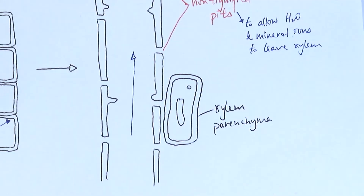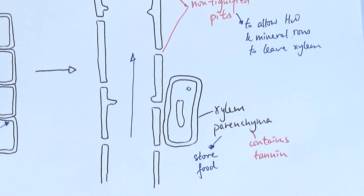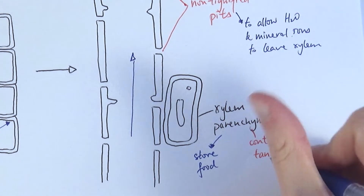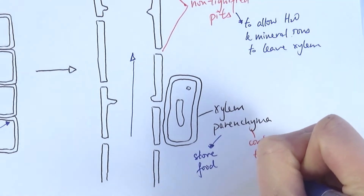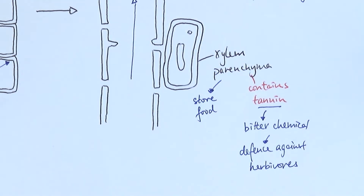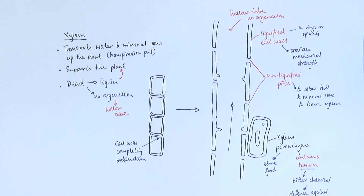Next to the xylem vessel, there will also sometimes be xylem parenchyma cells, and they serve two main functions. First, xylem parenchyma contains food stores, to enable the xylem to grow or even to repair if necessary. They also contain tannin, which is a specifically bitter chemical. Because it is bitter, when herbivores eat the plant they would taste the tannin, which is not very pleasant, and it will stop the herbivores from eating the plant any further — so it acts as a defense mechanism against herbivores. And that is the structure of the xylem.